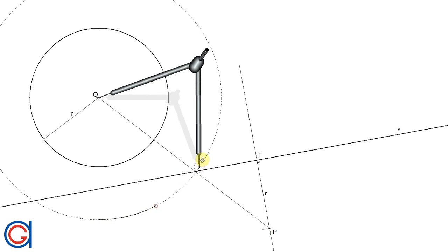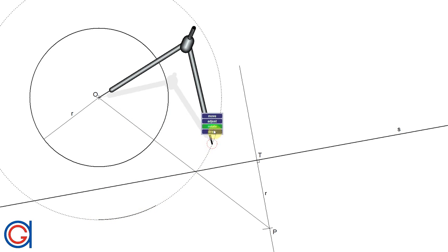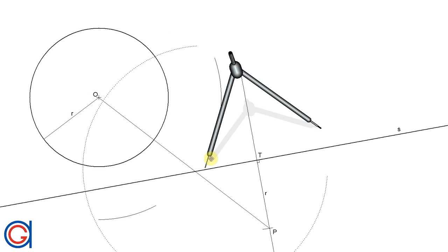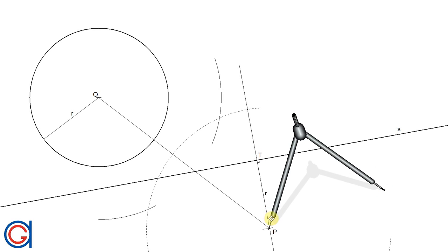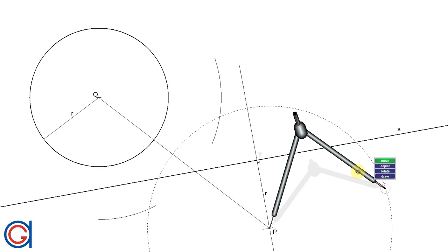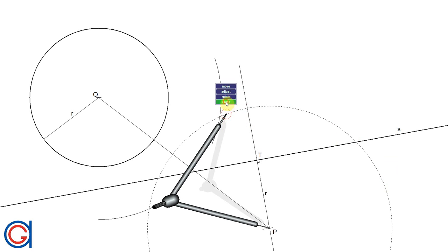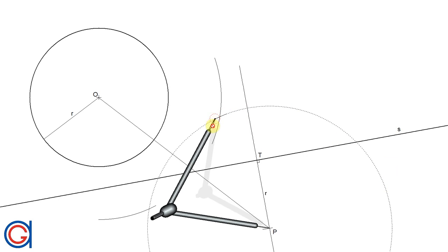Now with the same radius and setting the compass on point P, we describe another two arcs above and below the line, cutting our previously drawn arcs at two points, as can be seen here.